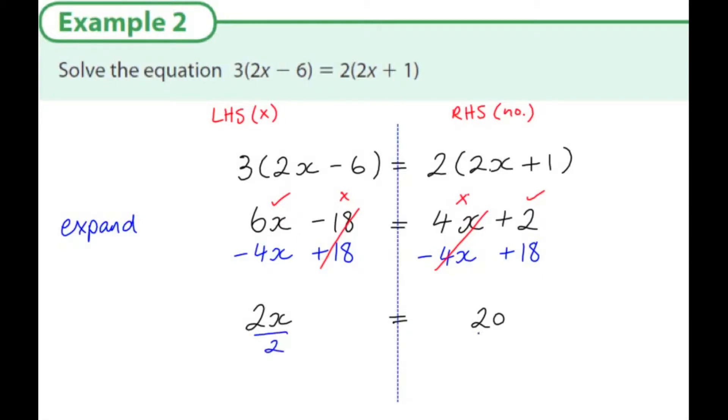Again, I don't want 2x, I just want 1x. So if I divide both sides, this gives me 1x, or x, is equal to 20 divided by 2. 20 divided by 2 is 10. And that's how you solve a simple linear equation.